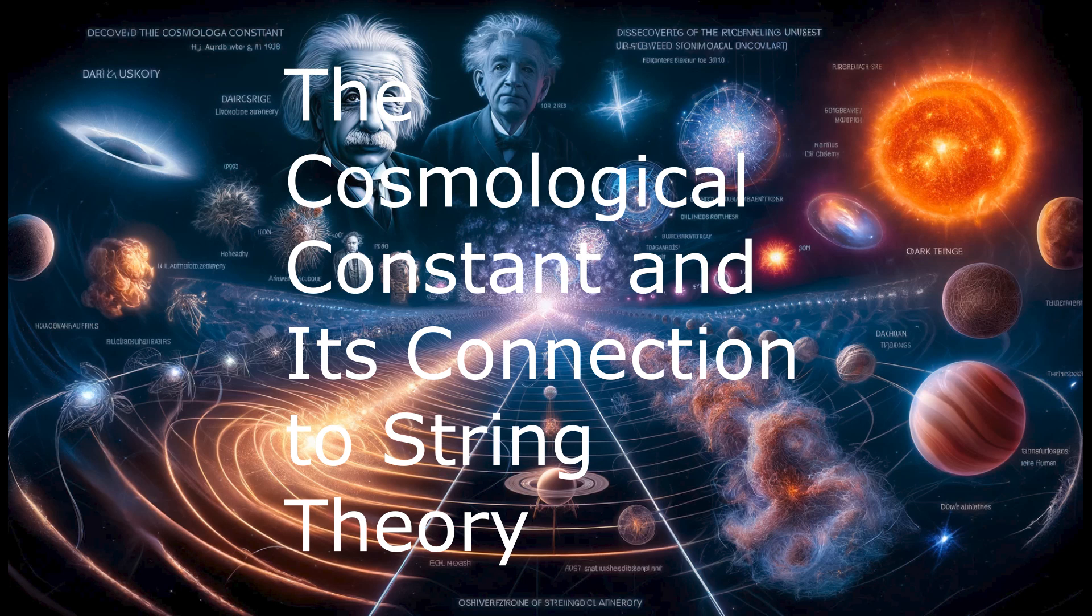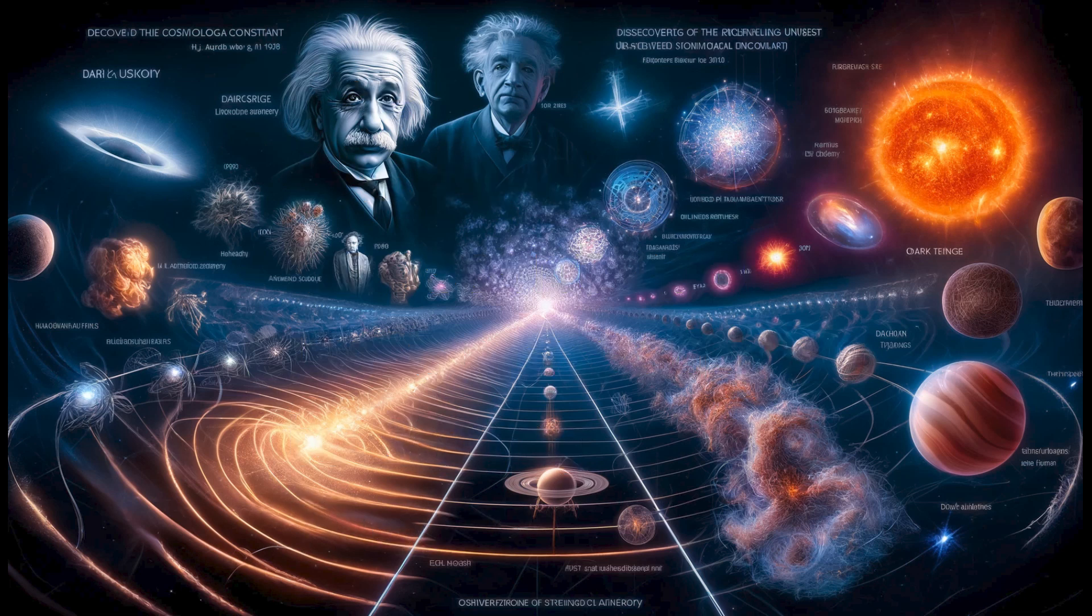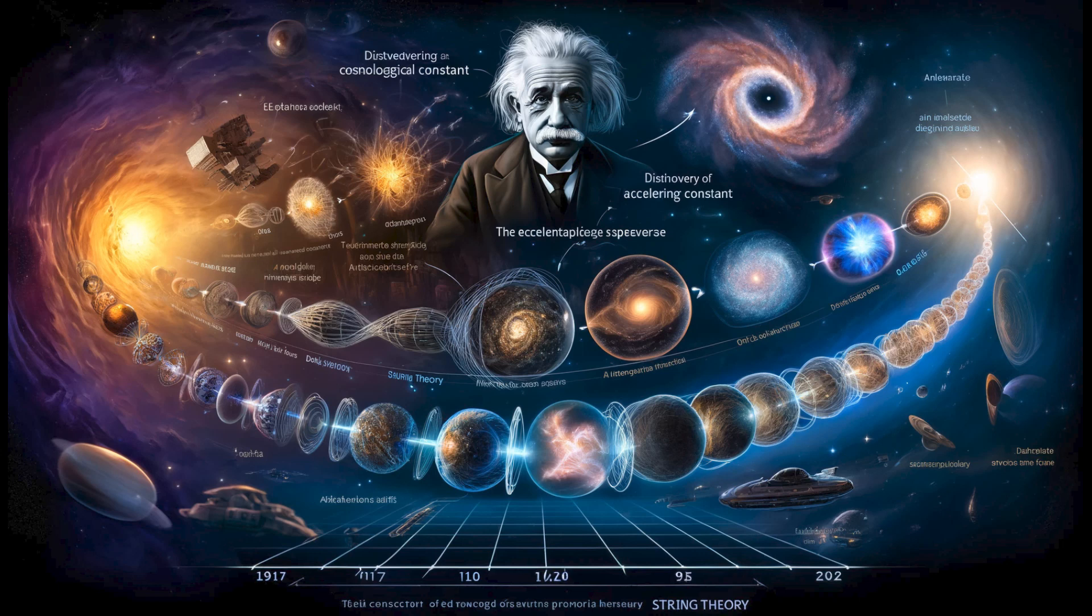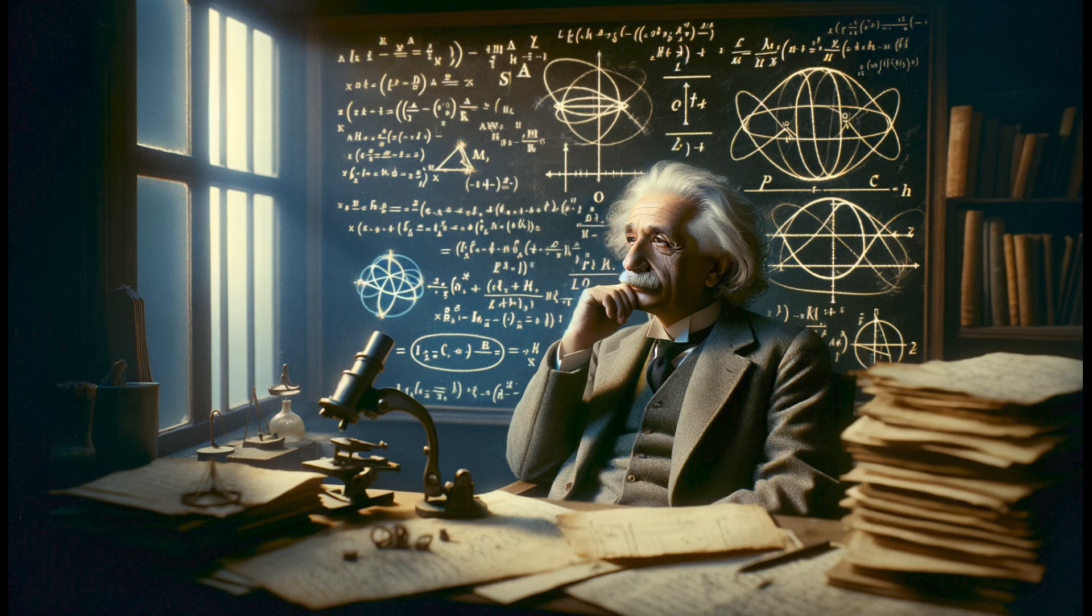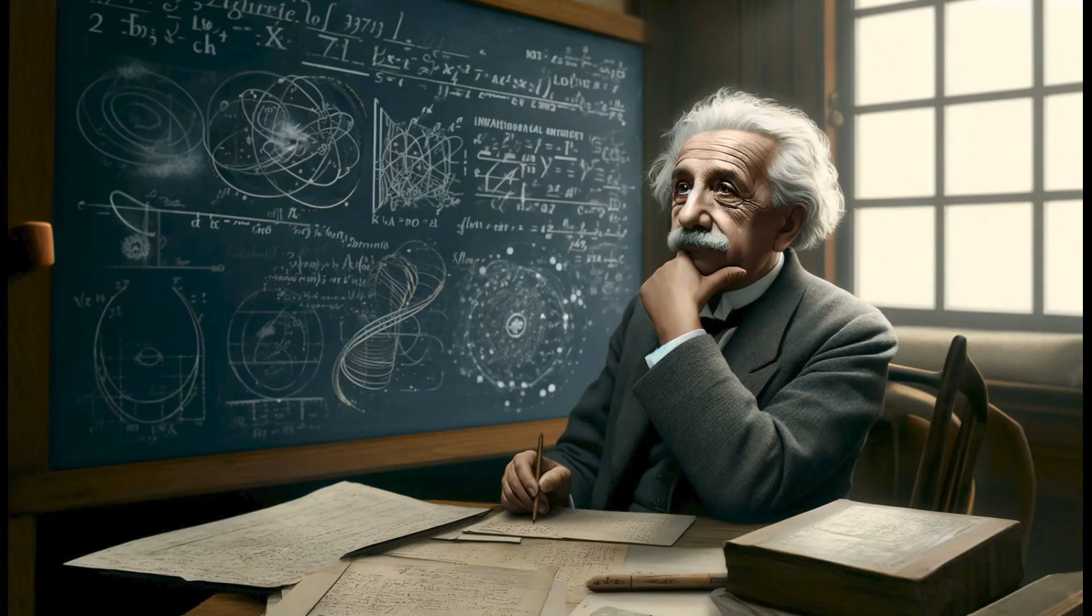The cosmological constant problem is a central puzzle in both theoretical physics and cosmology. Cosmological constant lambda, a concept coined by Einstein in 1917, has since been theorized in different variants.